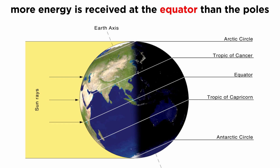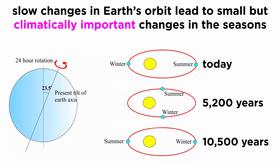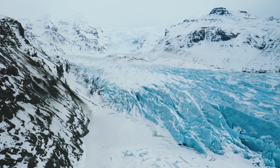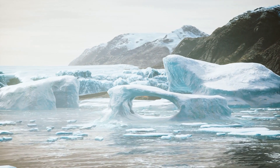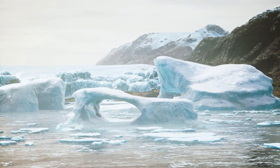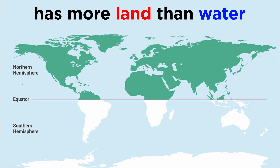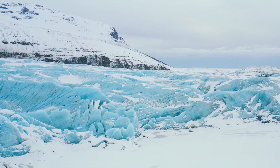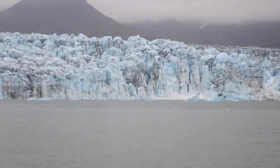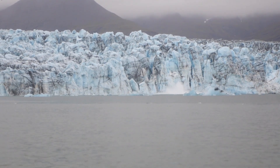Since the Earth is tilted in its orbit, the regions of Earth do not receive the same amount of energy — more energy is received at the equator than at the poles, and this difference can be exaggerated at different times. These slow changes in the Earth's orbit lead to small but climatically important changes in the strength of the seasons over tens of thousands of years. Additionally, other climate feedbacks in the internal climate system can amplify these small orbital changes. In the shift between glacial and interglacial periods on Earth, this is most related to the intensity of summers in the northern hemisphere, which has more land than water. Land warms faster than water, so this hemisphere is typically more sensitive to changes in solar radiation. When summers are mild, enough snow and ice remain throughout the season, maintaining glaciers and allowing them to grow larger in the winter. When summers are hotter, more ice melts in the summer than can be replenished in the winter, and ice growth is hindered.